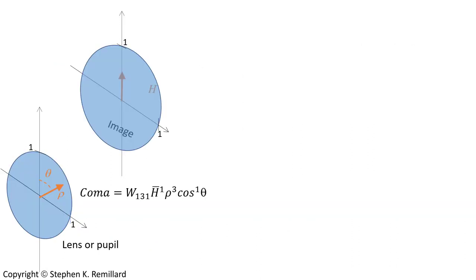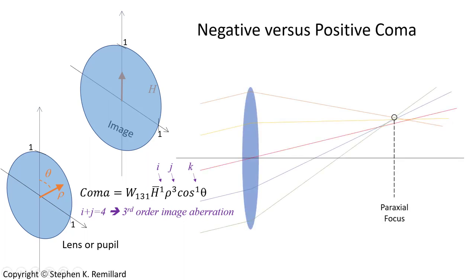Coma is a third-order Seidel aberration, meaning it comes from the fourth-order expansion term of the wavefront aberrations. Functionally it depends on the pupil radial coordinate rho, the image radial coordinate h, and the angle theta between rho and h, expressed as h·rho³·cos(theta). The exponents 1, 3, and 1 indicate this is a third-order aberration — when the exponent of h and the exponent of rho add up to 4, that is a third-order Seidel aberration.